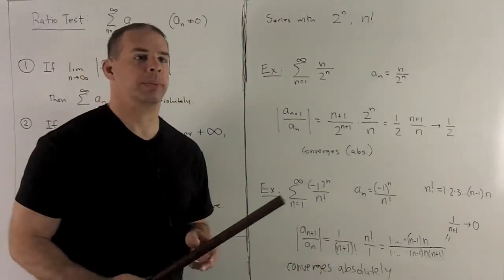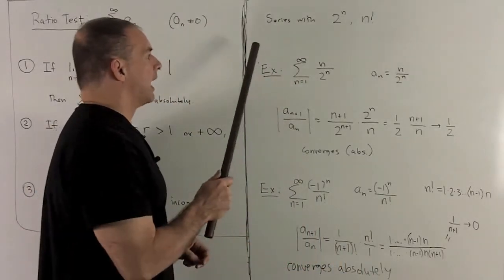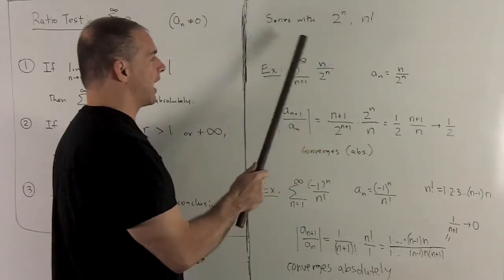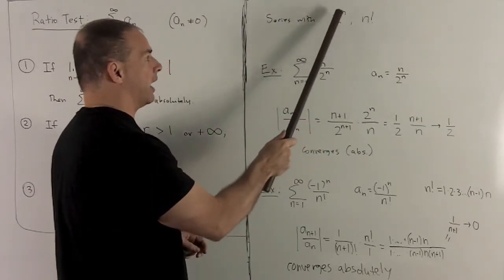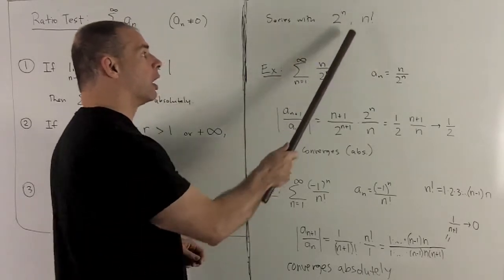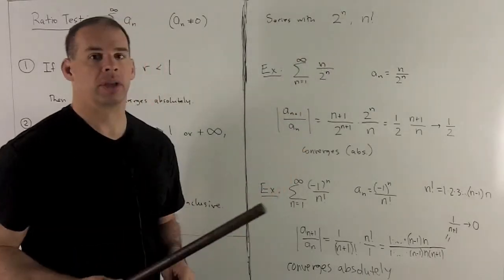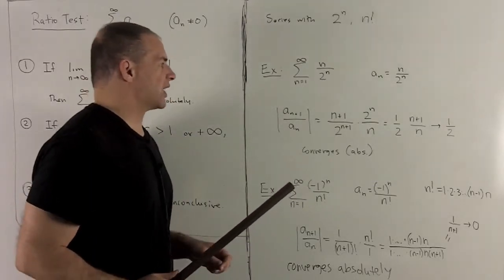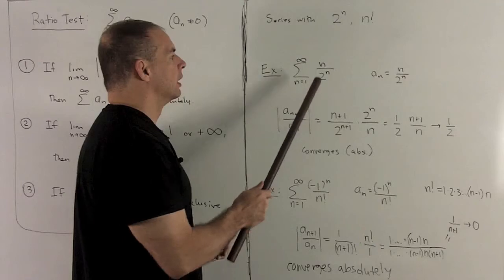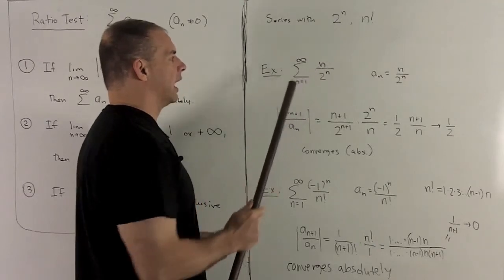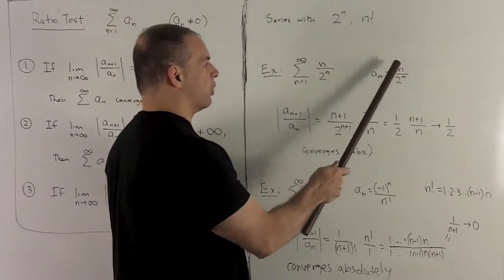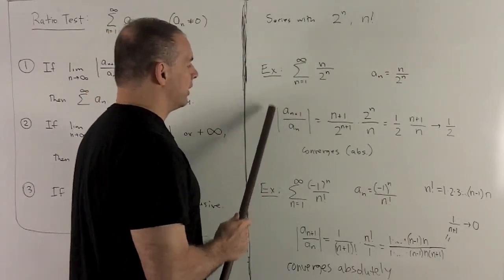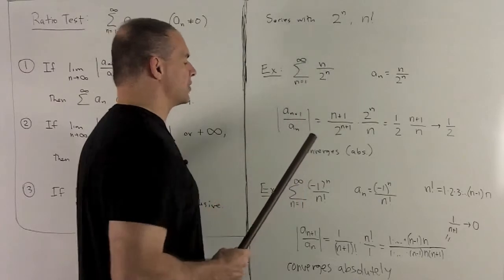Let's look at some examples. The ratio test works very well with series that have exponents in them where n is up in the exponent, or factorials. Let's take the series from 1 to infinity of n over 2 to the n. Our a sub n is n over 2 to the n. Setting up the ratio, I don't need absolute value signs here because all terms are positive.